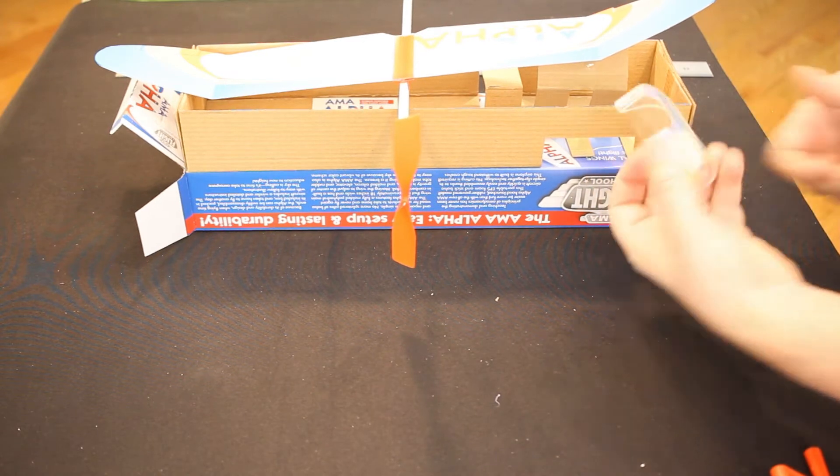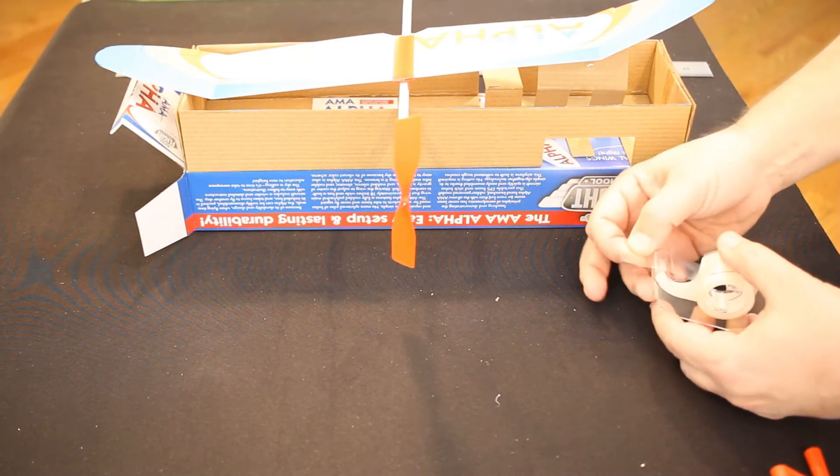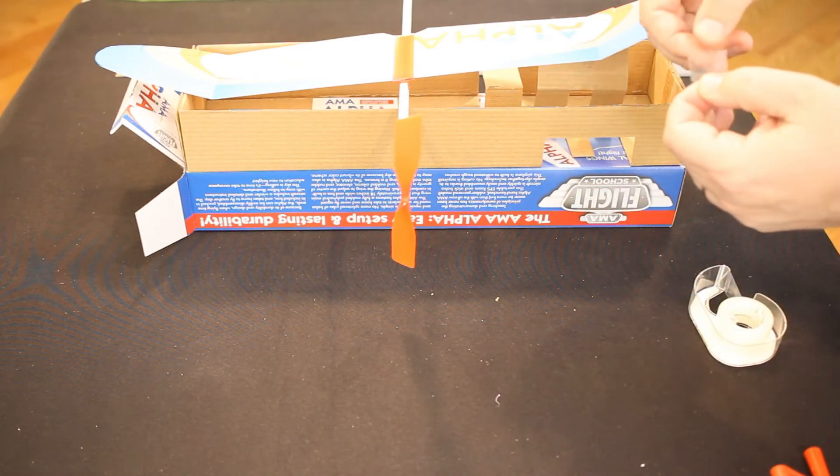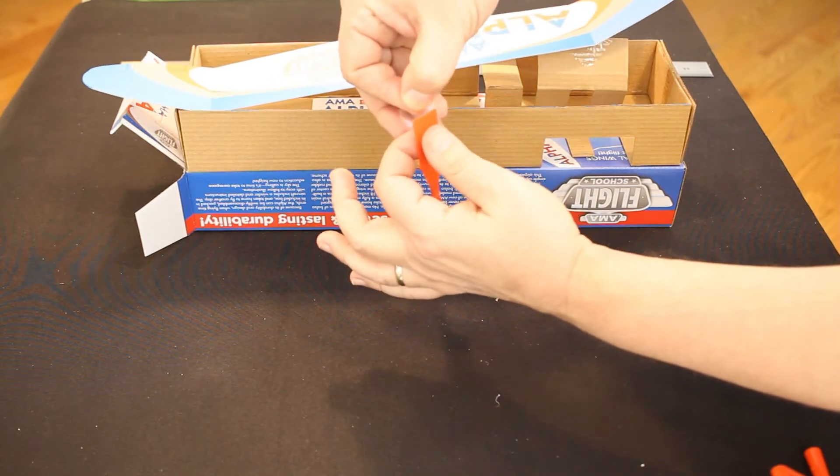So again, just a piece of basic scotch tape. I'm going to take a piece off, and then I'm just going to put a little bit on the back of this blade. So it'll look like this.